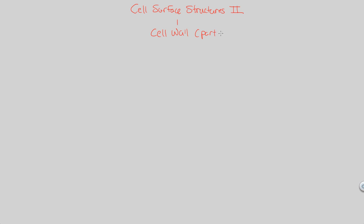Always keep in mind we're talking about the prokaryotic cell wall. We're going to look at a component specific to only the bacterial domain, known as peptidoglycan. When you think 'peptido,' think protein. And then you have another part of this word called 'glycan.' When you think glyco or glucose, it gives us the understanding that this is a combination of a protein and a monosaccharide or polysaccharide.